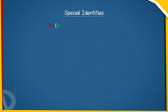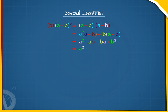(A−B)² equals (A−B) into (A−B) equals A into (A−B) minus B into (A−B) equals A² minus AB minus BA plus B² equals A² minus 2AB plus B². Thus, (A−B)² equals A² − 2AB + B².